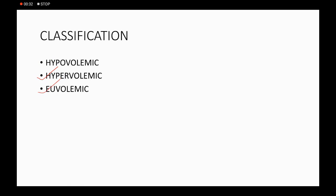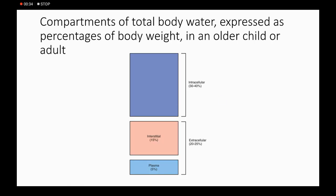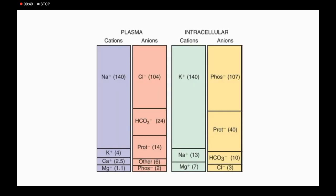In a cell there are compartments: the intracellular compartment containing 30 to 40 percent, and the extracellular compartment at 15 to 25 percent, which includes interstitial fluid and plasma. In plasma we see the cation sodium, and in the cell we see potassium — these are the basic things we should know.